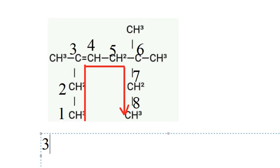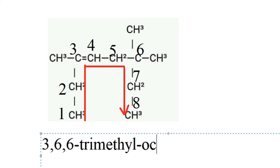We write 3,6,6-trimethyl. This is 8 carbons, so oct-. The location of the double bond is at number three.